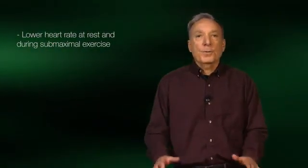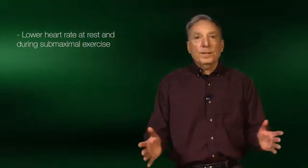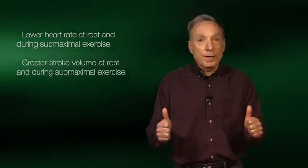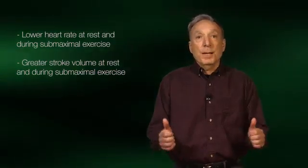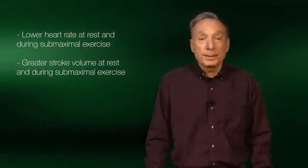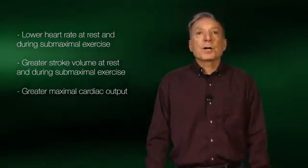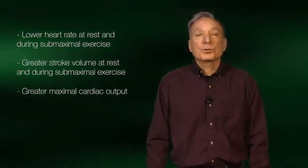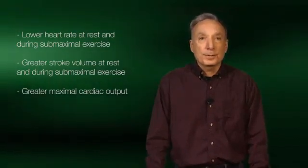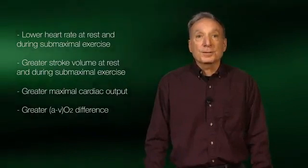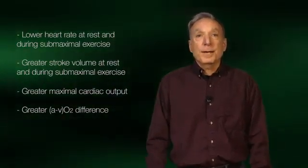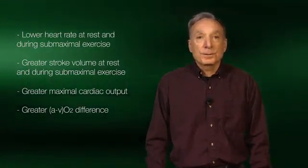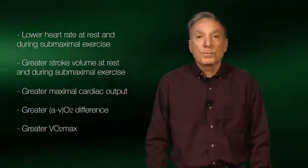Now let's examine the key training adaptations in the cardiovascular system associated with endurance training. A hallmark adaptation is a lower heart rate both at rest and during submaximal exercise. You can afford to have a lower heart rate because training results in an increase in stroke volume both at rest and during exercise, thereby maintaining resting and submaximal exercise cardiac output. There is also an increase in maximal cardiac output, which is entirely due to an increase in maximal stroke volume, as maximal heart rate does not change with training. Also, the arterial venous oxygen difference is greater during exercise after training. Together, the increase in maximal cardiac output and arterial venous oxygen difference result in an increase in maximal oxygen consumption or VO2 max.